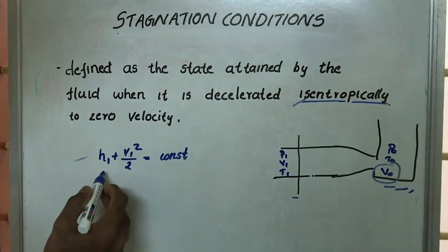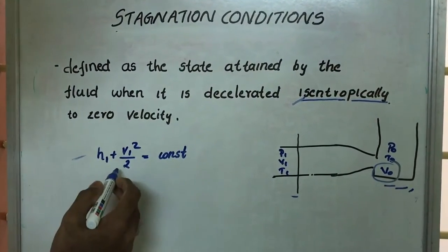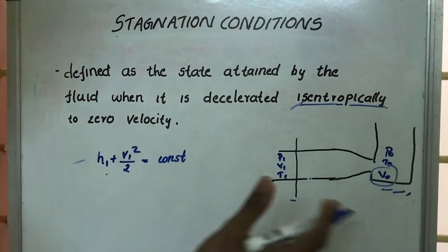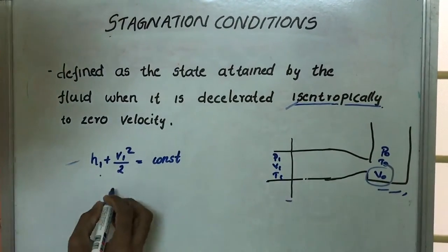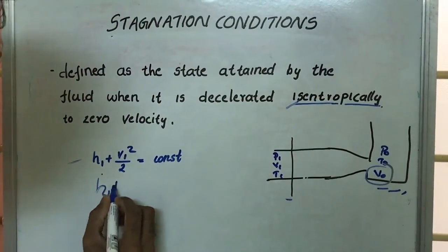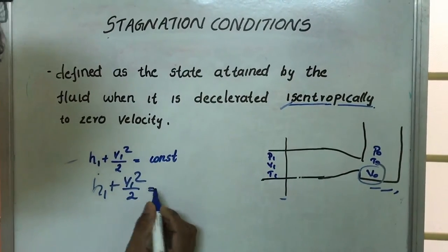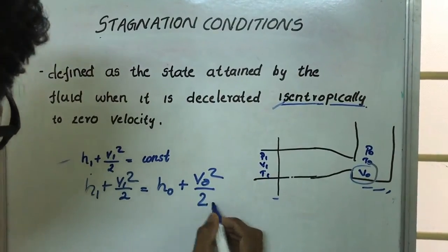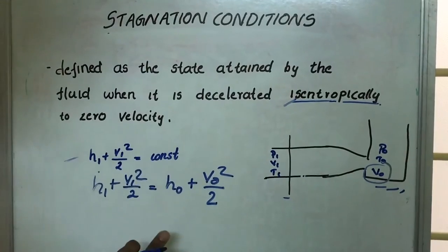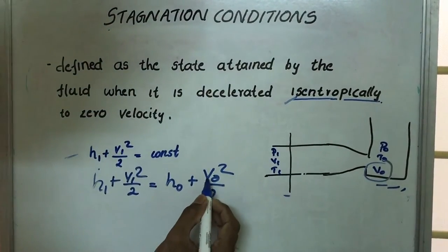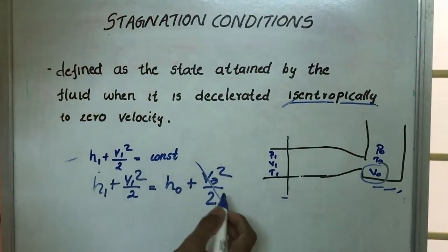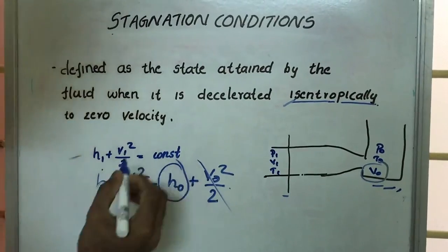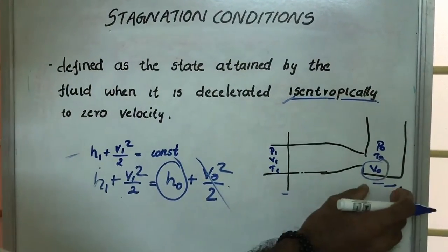By considering the energy equation, h1 plus v1 squared by 2 is a constant, where h1 is the total enthalpy and v1 is the velocity of the fluid. At the second condition, h0 plus v0 squared by 2 is equal to h1 plus v1 squared by 2. Since v0 is equal to zero, we can cancel that term, giving h1 plus v1 squared by 2 equals h0, where h0 is the total enthalpy at the reservoir or stagnation condition.